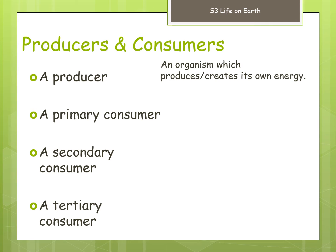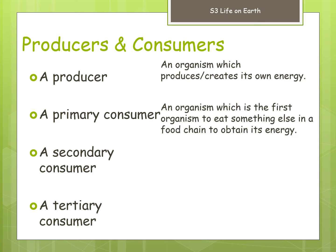A producer generally is a green plant, and it produces that energy by photosynthesis. You guys are consumers — you buy lots of stuff, you go to shops or online, and get your products. You don't produce anything, but you consume. That relates to the use of the word in our food webs and food chains. A primary consumer is an organism which is the first organism to eat something else in a food chain to obtain its energy, so it eats a producer.